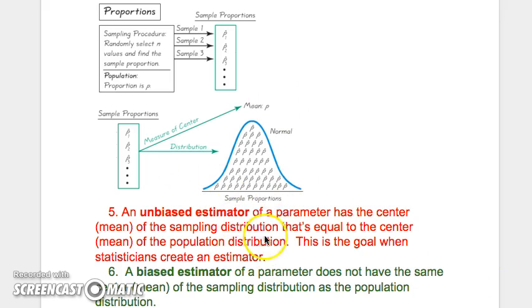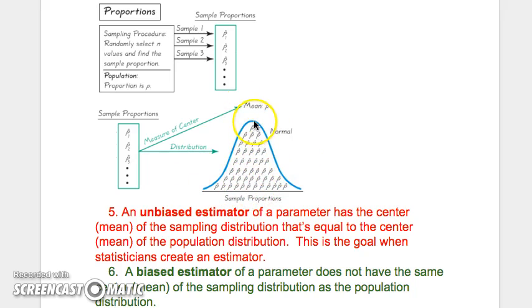An unbiased estimator of a parameter would have a center that equals the true center. That's the goal with taking a stratified random sample — we're trying to take away the bias and get a true picture of what's really going on. If we do that, the average of all these p-hats will sometimes be below and sometimes above by chance, but the average of all of them will be the true value — the true proportion of all 319 million Americans that actually get three hours of exercise. A biased estimator would be one that either underestimates or overestimates for one reason or another.